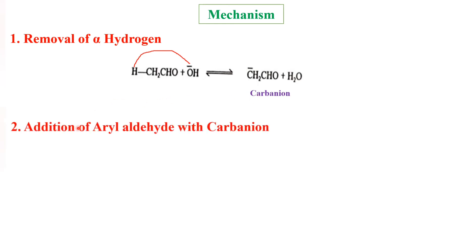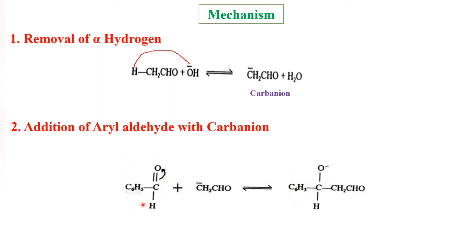The second step is addition of the aryl aldehyde with the carbanion. The carbanion reacts with the aromatic aldehyde, benzaldehyde. The C=O double bond of benzaldehyde is broken — the carbanion attaches to the carbonyl carbon, the double bond becomes a single bond, and oxygen gets a negative charge, forming an intermediate.